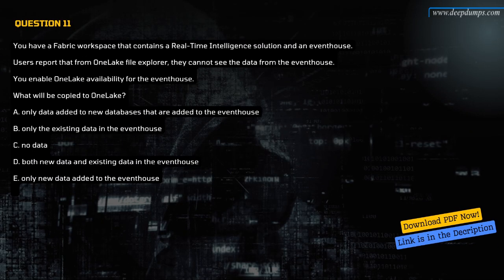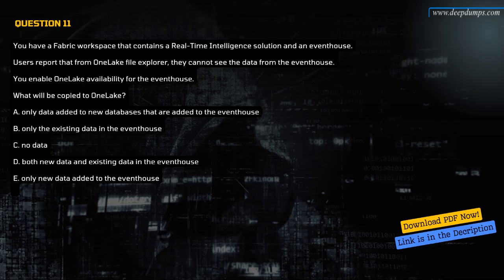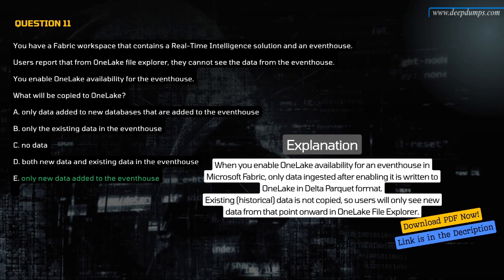Question 11. You have a Fabric workspace that contains a real-time intelligence solution and an event house. Users report that from OneLake File Explorer, they cannot see the data from the event house. You enable OneLake availability for the event house. What will be copied to OneLake? A. Only data added to new databases added to the event house. B. Only the existing data. C. No data. D. Both new and existing data. E. Only new data added to the event house. The correct answer is E. When you enable OneLake availability for an event house in Microsoft Fabric, only data ingested after enabling it is written to OneLake in Delta Parquet format. Existing historical data is not copied, so users will only see new data from that point onward.